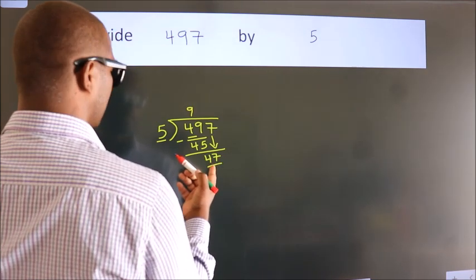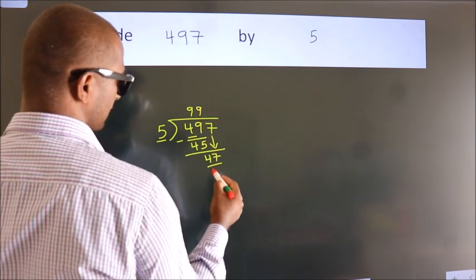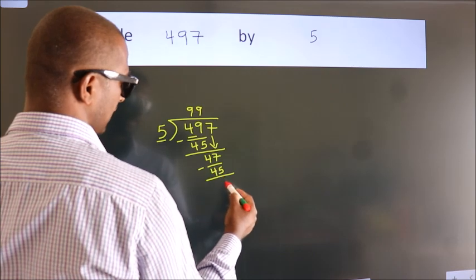A number close to 47 in the 5 table is 5 nines, 45. Now we subtract. We get 2.